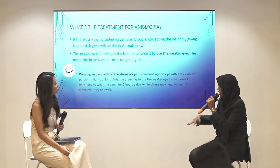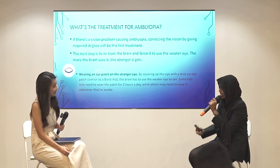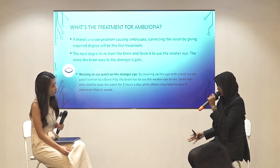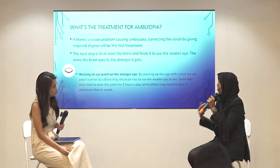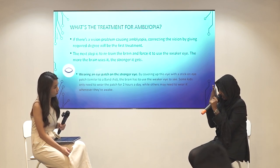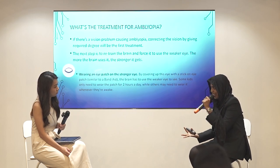Moving on to how to treat amblyopia. The first step is to correct the refractive error. Then, patch the stronger eye and push the weaker eye to work, to get information to the brain. We push the eye to work so that the amblyopia improves and vision is received from both eyes. So correction is the first step, and secondly, patching the eye to cause the weaker eye to work.